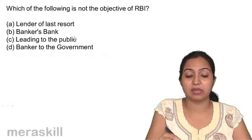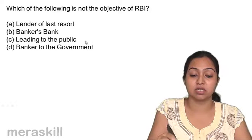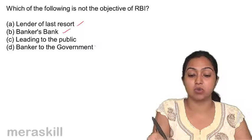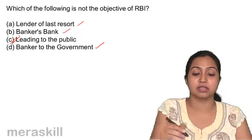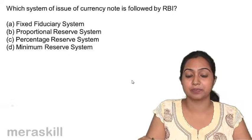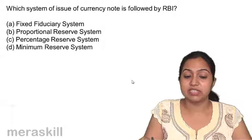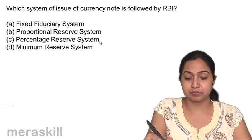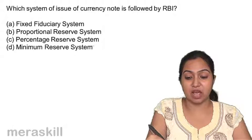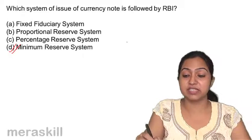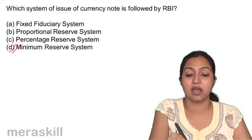Which of the following is not an objective of RBI? Advancing loans to the public is not an objective — there is no public dealing in RBI. Which system of issue of currency is followed by RBI? RBI follows the minimum reserve system for issuing currency — a minimum reserve is kept and against that, currency is issued.